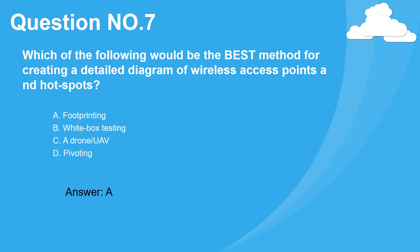Question number seven. Which of the following would be the best method for creating a detailed diagram of wireless access points and hotspots? A. Footprinting. B. White box testing. C. A drone UAV. D. Pivoting. Answer: A.